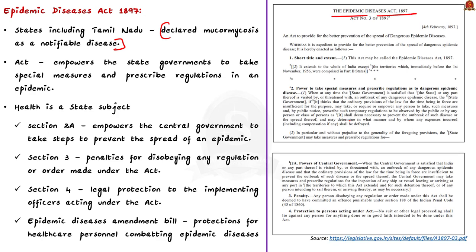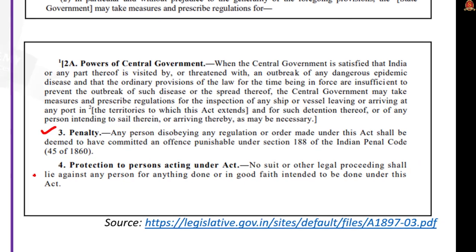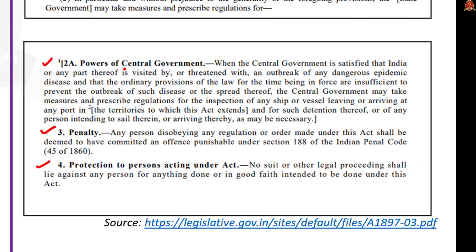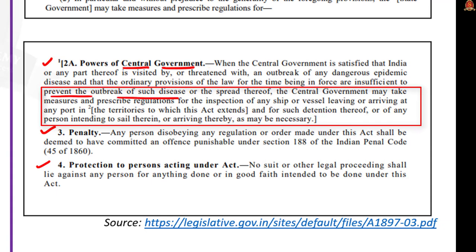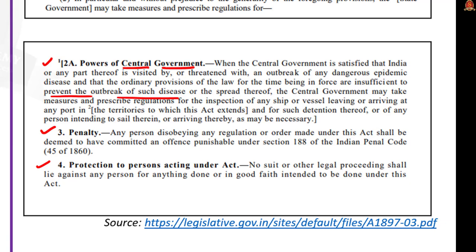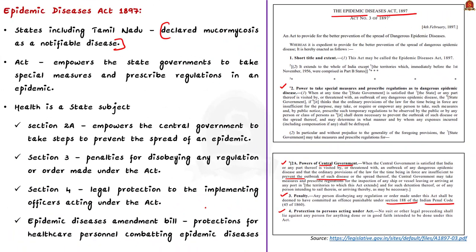The Epidemic Diseases Act of 1897 is a colonial-era act. It empowers the state government to take special measures and prescribe regulations in an epidemic. It defines penalties for disobedience and provides immunity for actions taken under the act in good faith. Section 2A empowers the central government to prevent the spread of an epidemic, including power to inspect ships and detain persons. Section 3 provides penalties under Section 188 of the Indian Penal Code. Section 4 gives legal protection and immunity to implementing officers acting under this act.